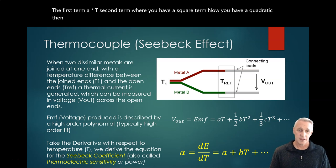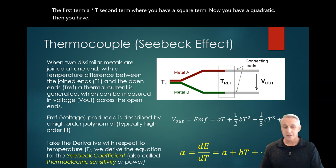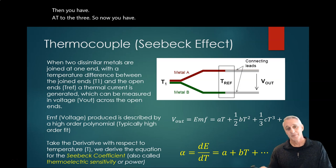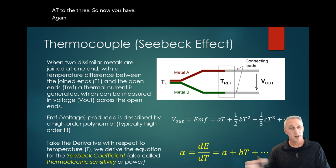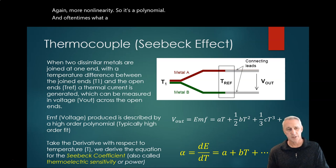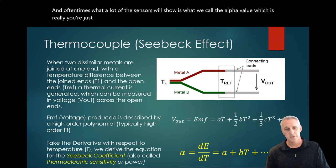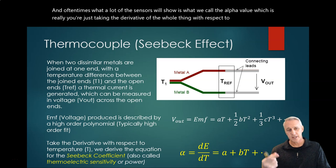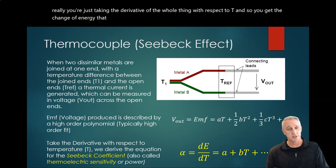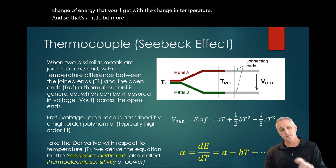Then you have T to the three, so now you have more nonlinearity - it's a polynomial. Oftentimes what a lot of sensors will show is what we call the alpha value, which is really just taking the derivative of the whole thing with respect to T. So you get the change of energy that you'll get with the change in temperature.